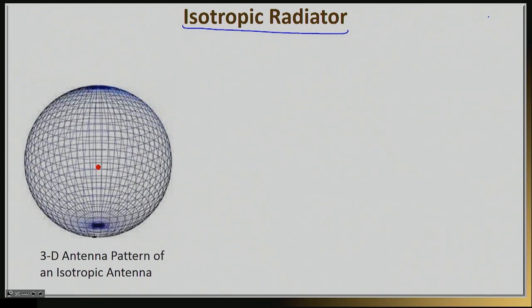An isotropic radiator, given here schematically as this red dot, is basically an imaginary antenna that will radiate equally well in all directions. It will isotropically spread its energy, its radiated energy, and if you're standing on any part of the sphere, you will basically feel exactly the same power density.